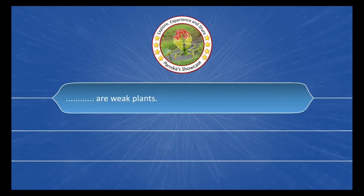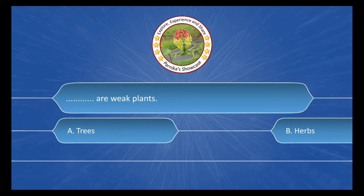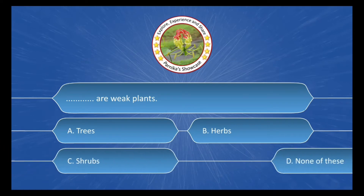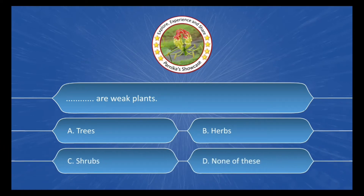___ are weak plants. The options are: A. Trees, B. Herbs, C. Shrubs, D. None of these. The correct answer is Option B: Herbs.